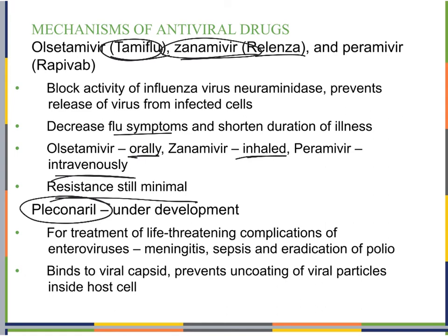Pleconaril is under development for life-threatening complications of enteroviruses such as meningitis and sepsis, and also for polio. It binds to the capsid and prevents the uncoating of viral particles inside the host cell. Even if the endosome dissolves, it binds to the capsid to prevent the RNA or DNA from being released to start replication.